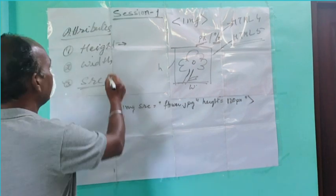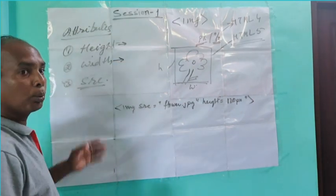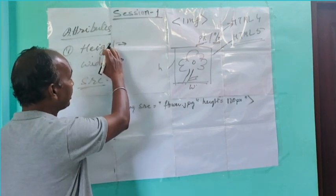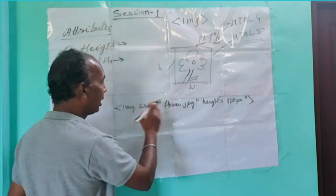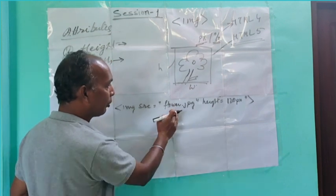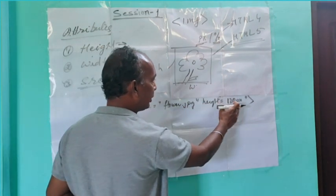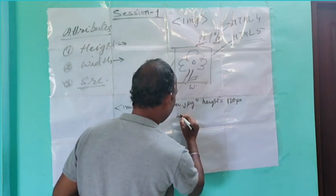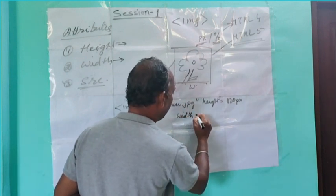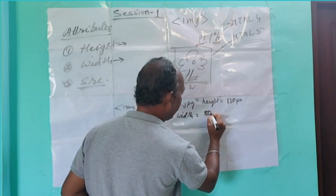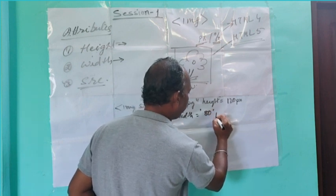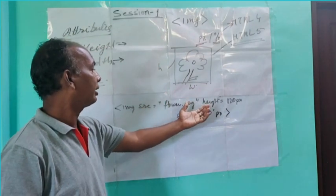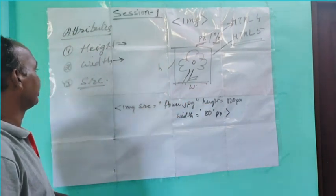Width is used to specify the width of the image. You can use both attributes in a single tag. After adding the image source flower.jpeg and height equals to 120 pixels, you can write width equals to 80px. So here we can specify both height and width of the image.